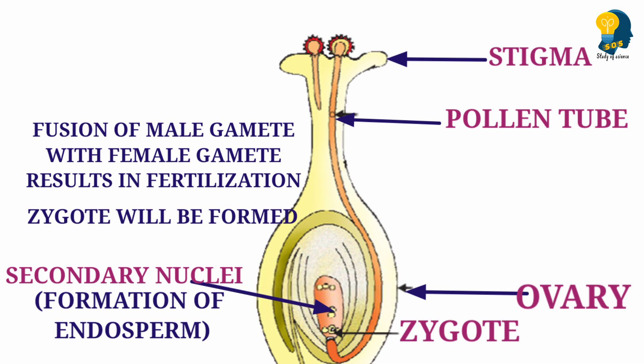The zygote gets food from the endosperm because it has to survive and develop. Zygote develops, and it needs food. That food is received from the endosperm, which is formed due to the fusion of the male gamete with the secondary nuclei.